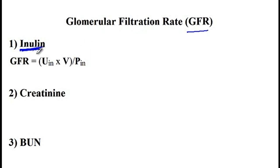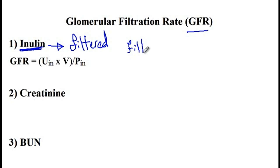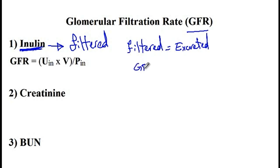Inulin is the best agent for measuring the GFR in that it is freely filtered but neither reabsorbed nor secreted. So the amount of inulin filtered by the kidney equals the amount excreted, because none of it is reabsorbed or secreted inside the renal tubules. Therefore, GFR times plasma concentration of inulin equals urinary inulin times the volume of the urine.